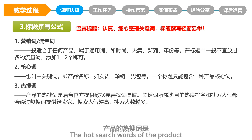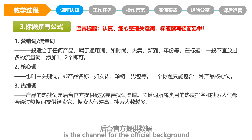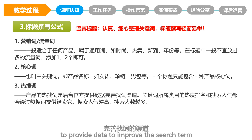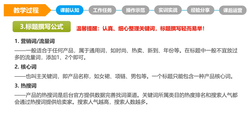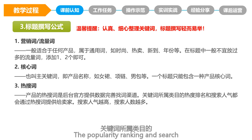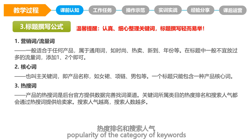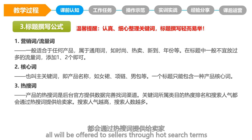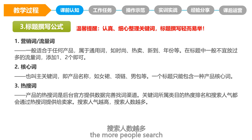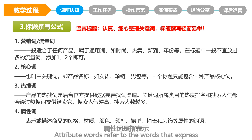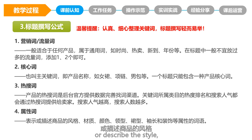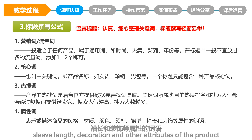The hot search words of the product are provided by the official platform backend to improve search terms. The popularity ranking and search popularity of category keywords are offered to sellers through hot search terms. The more popular the search, the more people search. Attribute words refer to words that express or describe the style, material, color, pattern, sleeve length, decoration, and other attributes of the product.